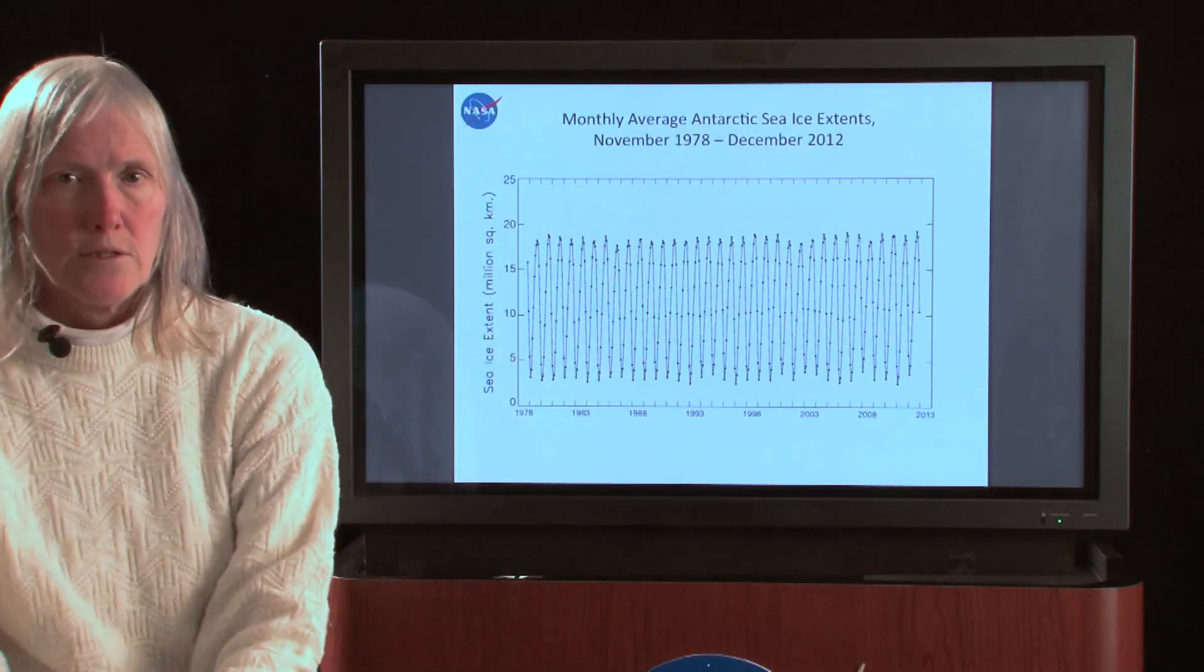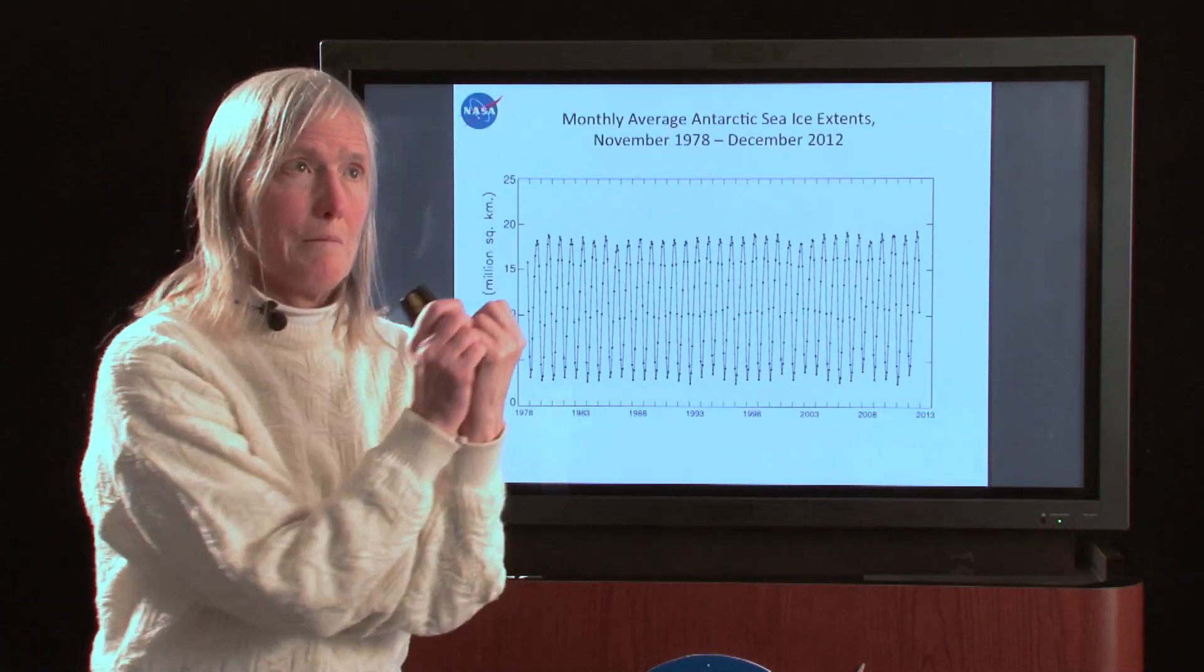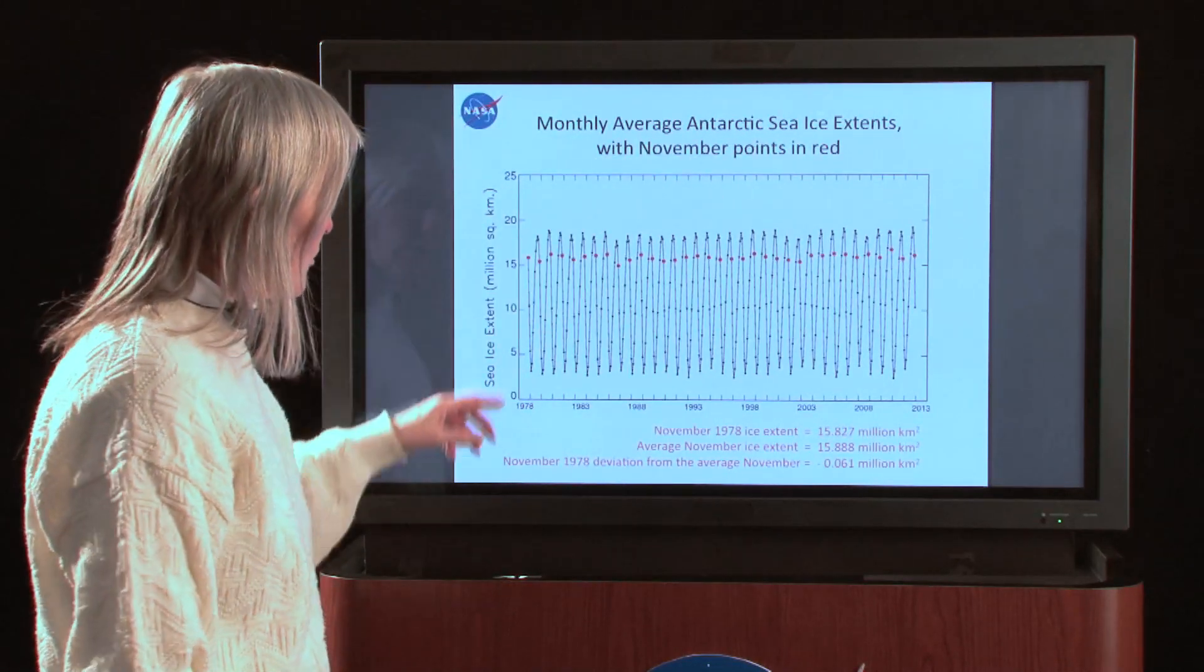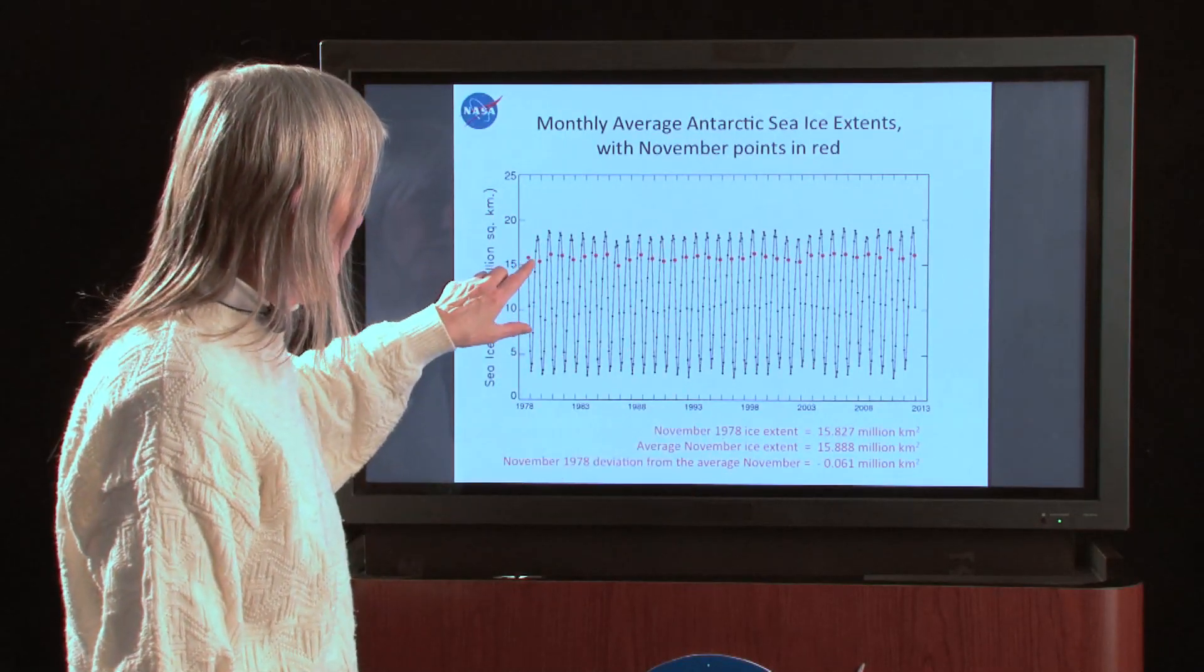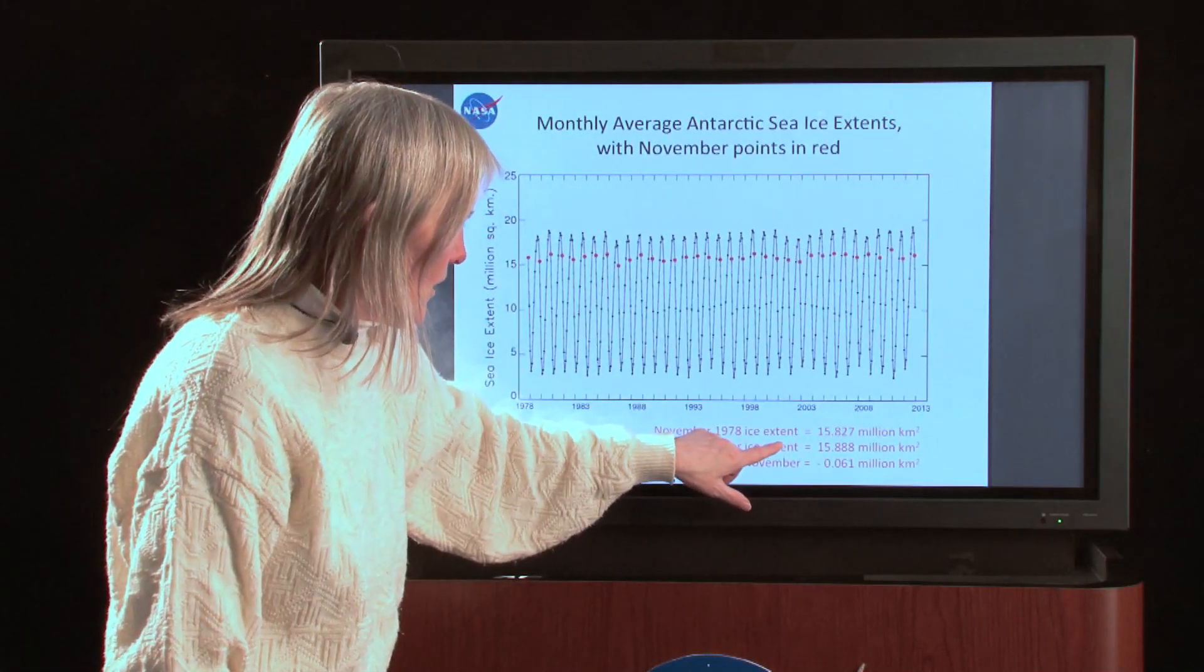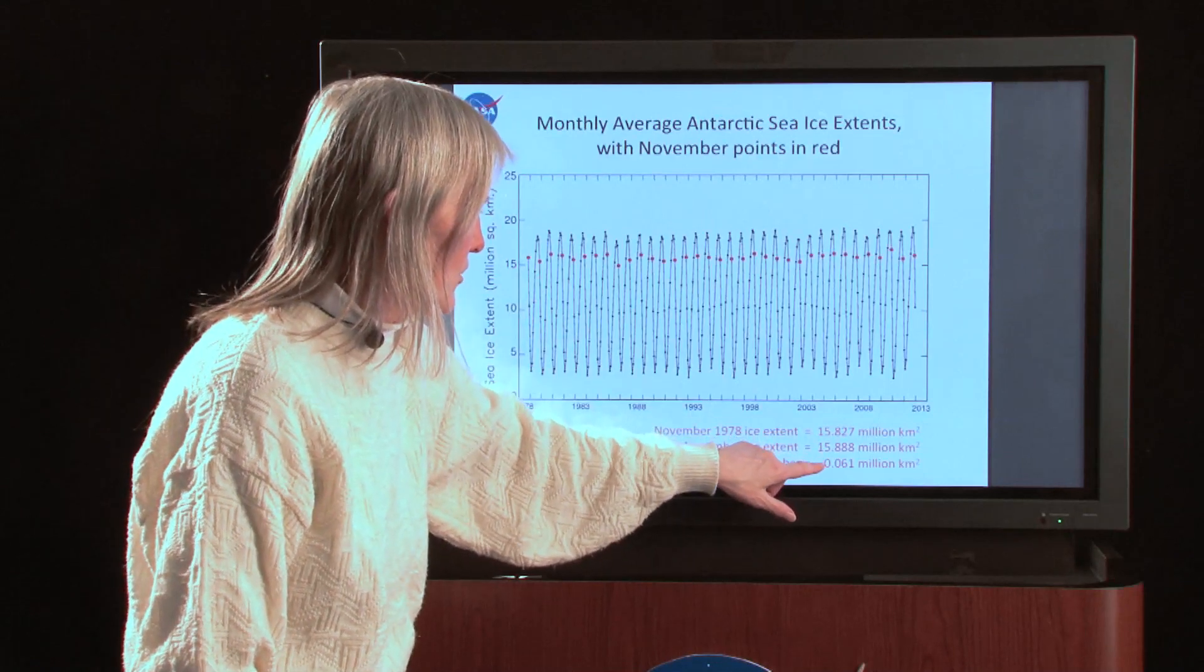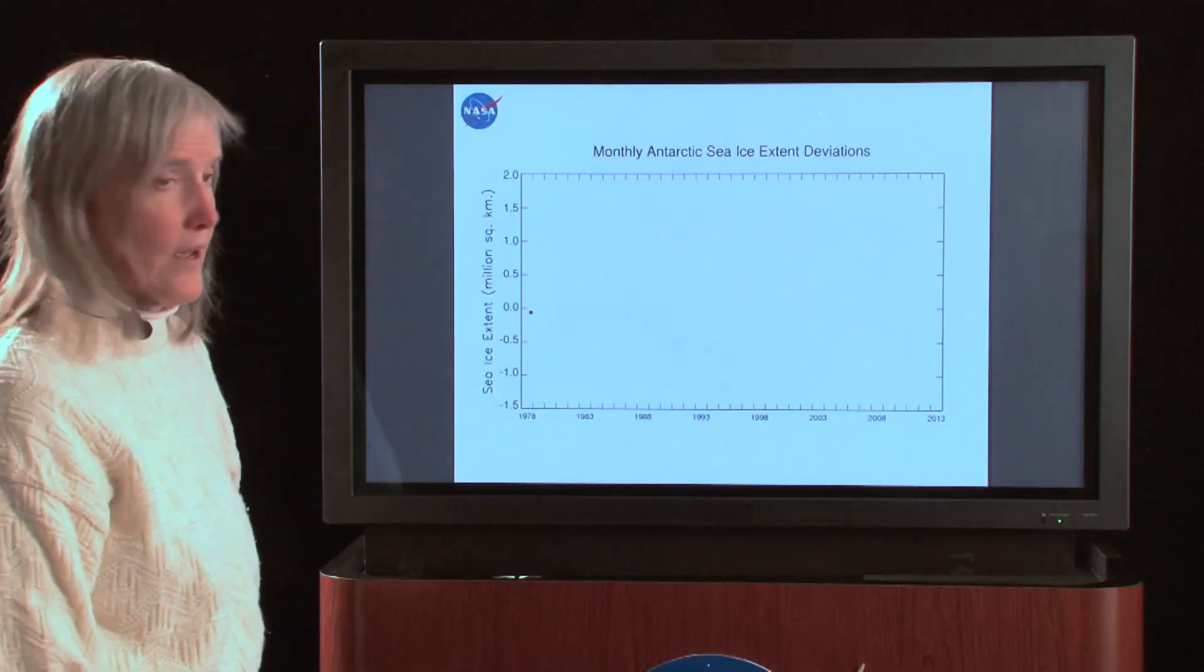Antarctic, we do exactly the same thing. And again, that's the power of math. You learn mathematical techniques and you can use the same technique over and over for different things. So again, to get our monthly deviations, we start with the first point which is a November point, November 1978. So we highlight all the Novembers, take the average of all those Novembers, subtract the average from the point we're looking at, the 1978 point, do the subtraction, and now we get a slightly negative value and we plot that slightly negative value there.